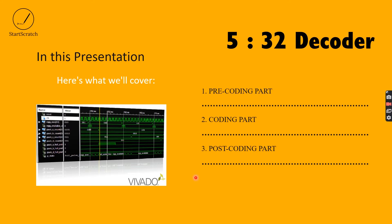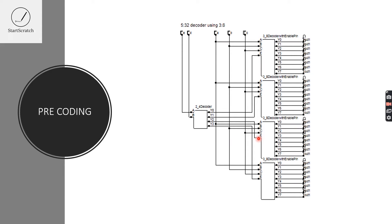Hello everyone, I am Anjan and welcome to the 17th video tutorial of the Verilog course series. In this video, you will be getting to know how a 5-to-32 decoder works and how to design a Verilog code for it. For a better understanding, I split the video into three parts: the pre-coding part, the coding part, and the post-coding part. Let's move on to the pre-coding part.